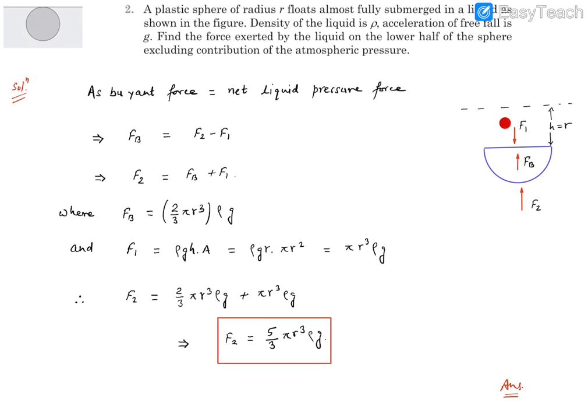These two forces resultant as the buoyancy force. We know the buoyant force is equal to net liquid pressure force. From here we can write: buoyancy force is going to be equal to the resultant of these two forces. Since buoyancy is written as vertically upward, the resultant force will be upward as F2 minus F1.